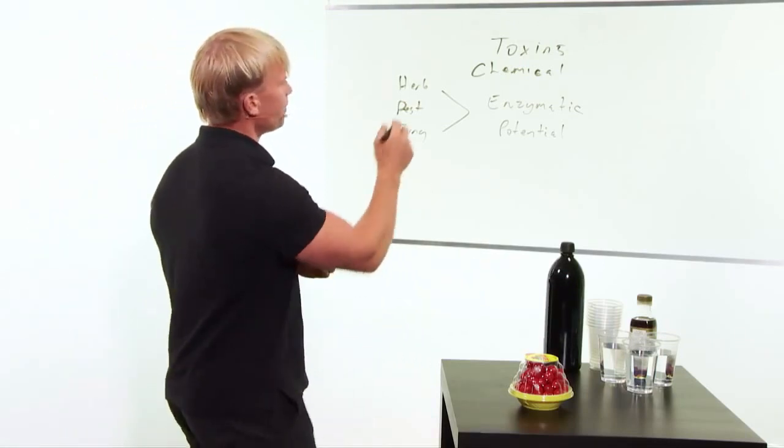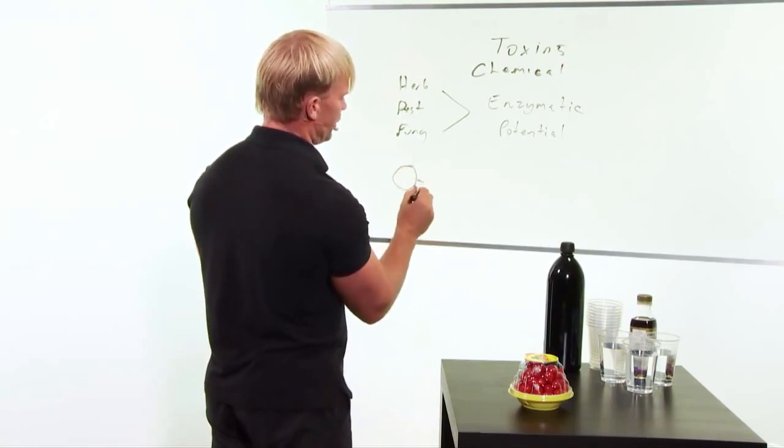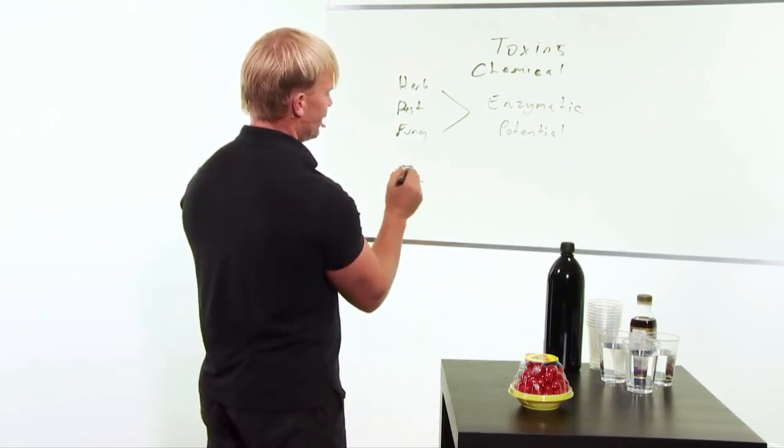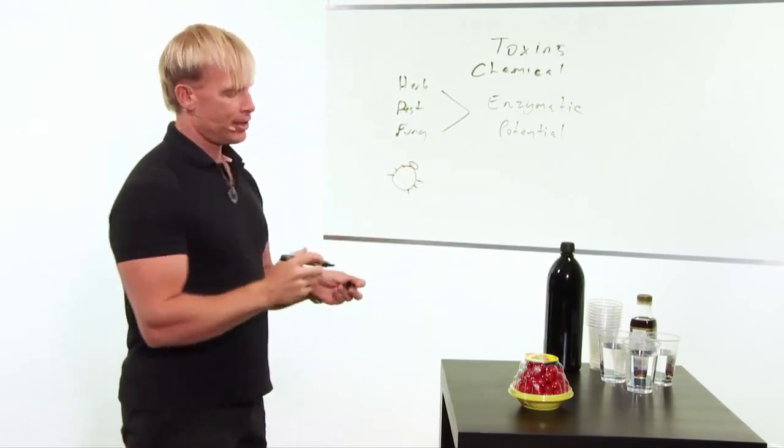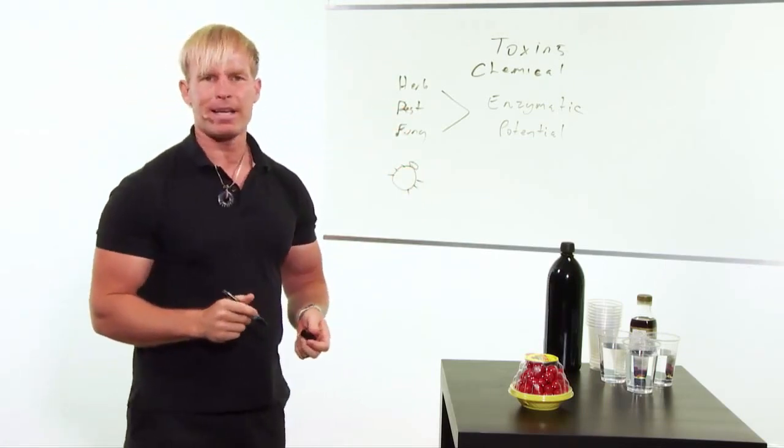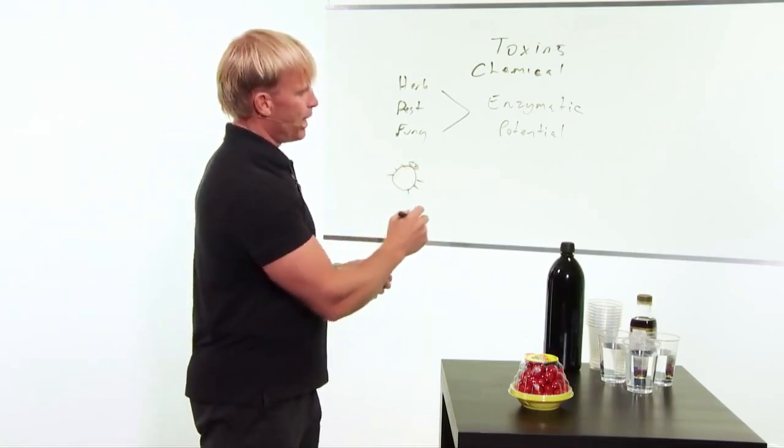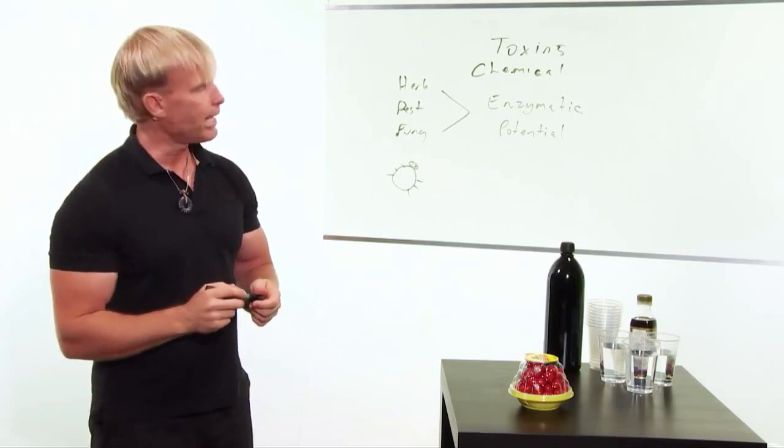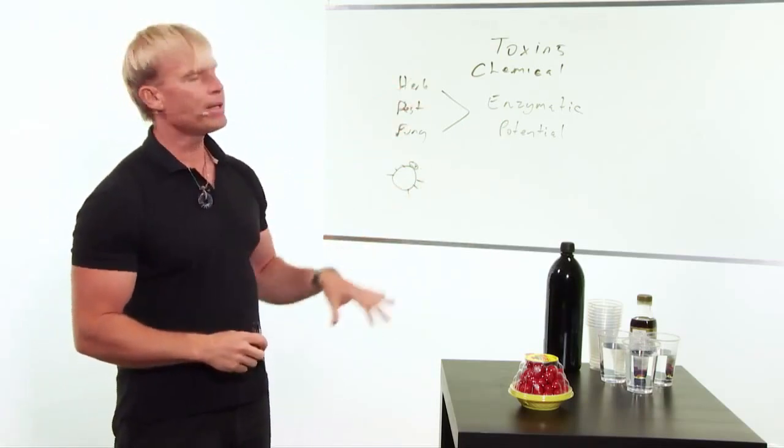Going back here, why do they use chemicals? Here's a little bug, and he likes to eat the vegetables. They spray an oil-based pesticide, herbicide, or fungicide on here, and this little guy eats that, and guess what? He dies, and he dies because his enzymatic potential got destroyed from these chemicals.